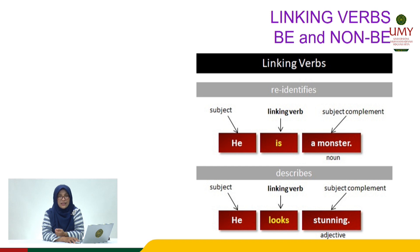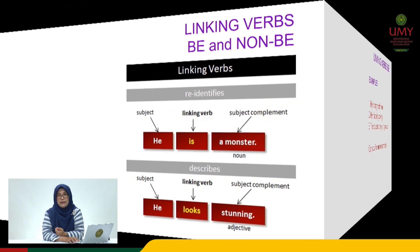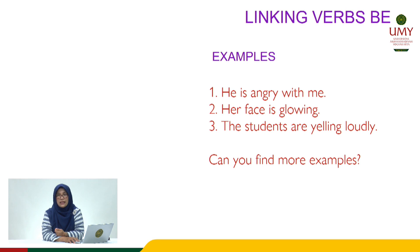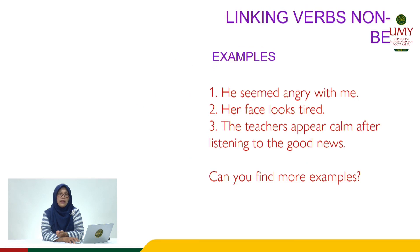Let's look at examples of linking verb B in more detail. In sentence number one, 'He is angry with me' — 'is' is a linking verb B. In sentence number two, 'Her face is glowing.' In sentence number three, 'The students are yelling loudly.' From these three sentences, the type of verbs used are linking verb B.